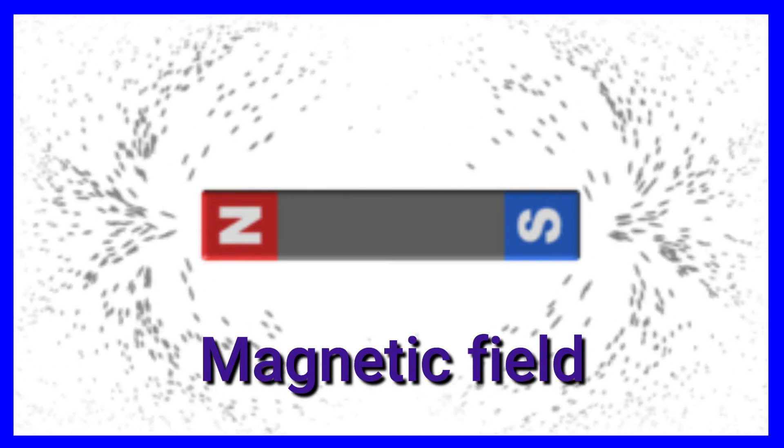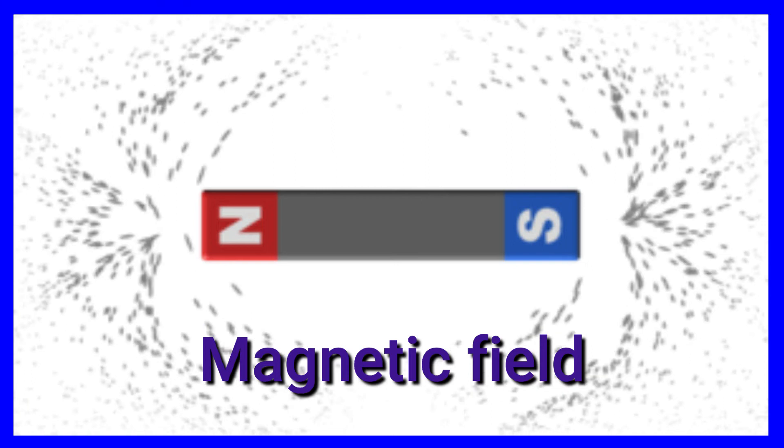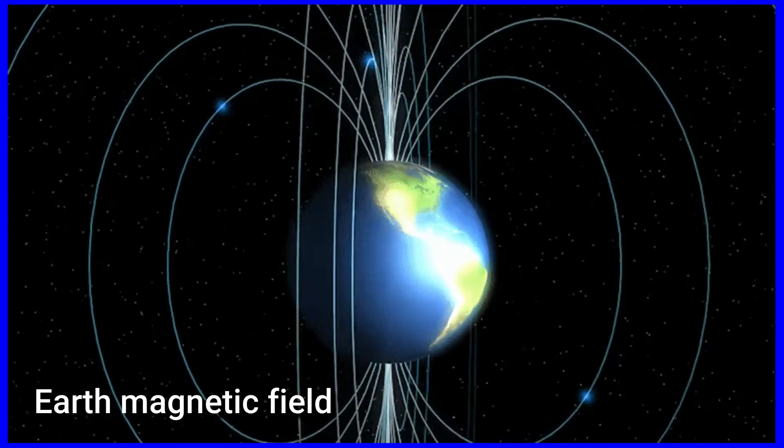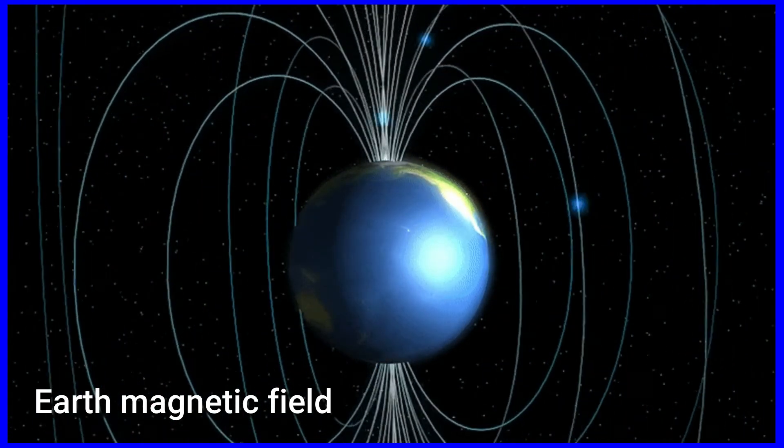What is a magnetic field? It is the area around a magnet in which the effect of magnetism is felt, and magnetic substances get attracted.